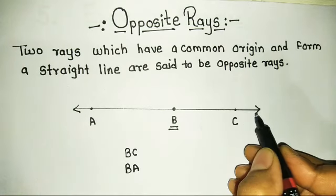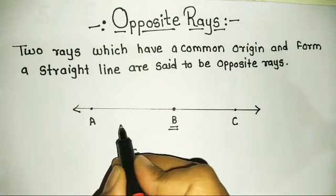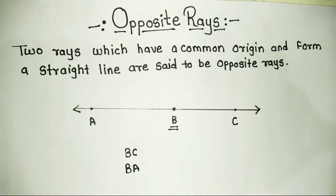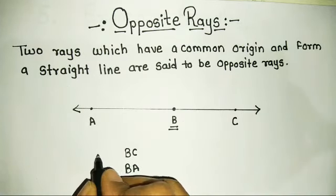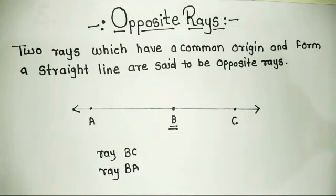Ray BC and ray BA form a straight line from their common origin. These two rays are called opposite rays. For example, ray BC and ray BA are opposite rays.